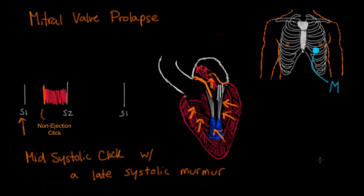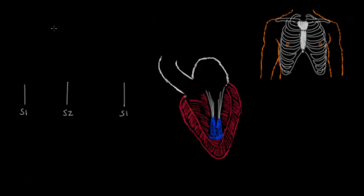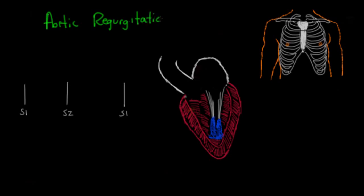Now that we're done with systolic murmurs, let's move on to diastolic murmurs. The first diastolic murmur we'll discuss is aortic regurgitation. This means blood is coming back through the aortic valve when it's supposed to be closed.